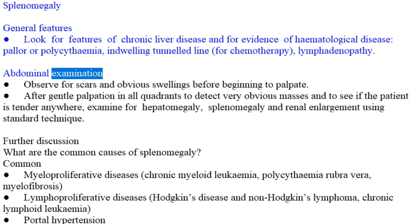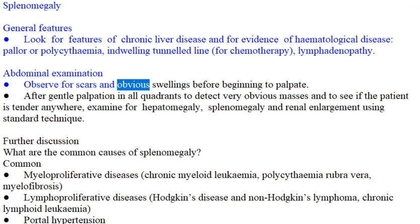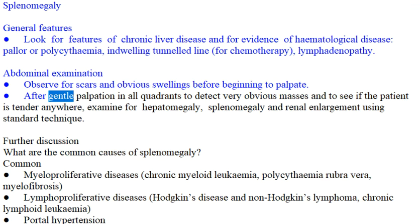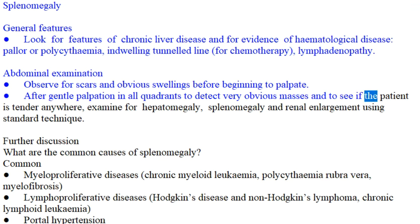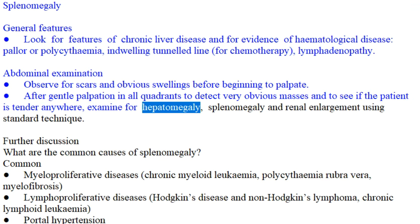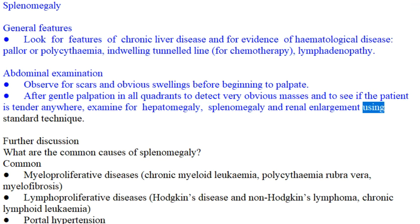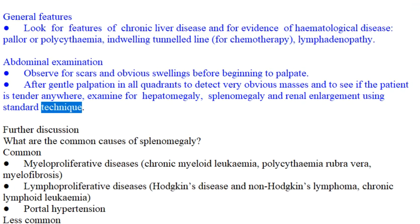Abdominal Examination: Observe for scars and obvious swellings before beginning to palpate. After gentle palpation in all quadrants to detect very obvious masses and to see if the patient is tender anywhere, examine for hepatomegaly, splenomegaly and renal enlargement using standard technique.